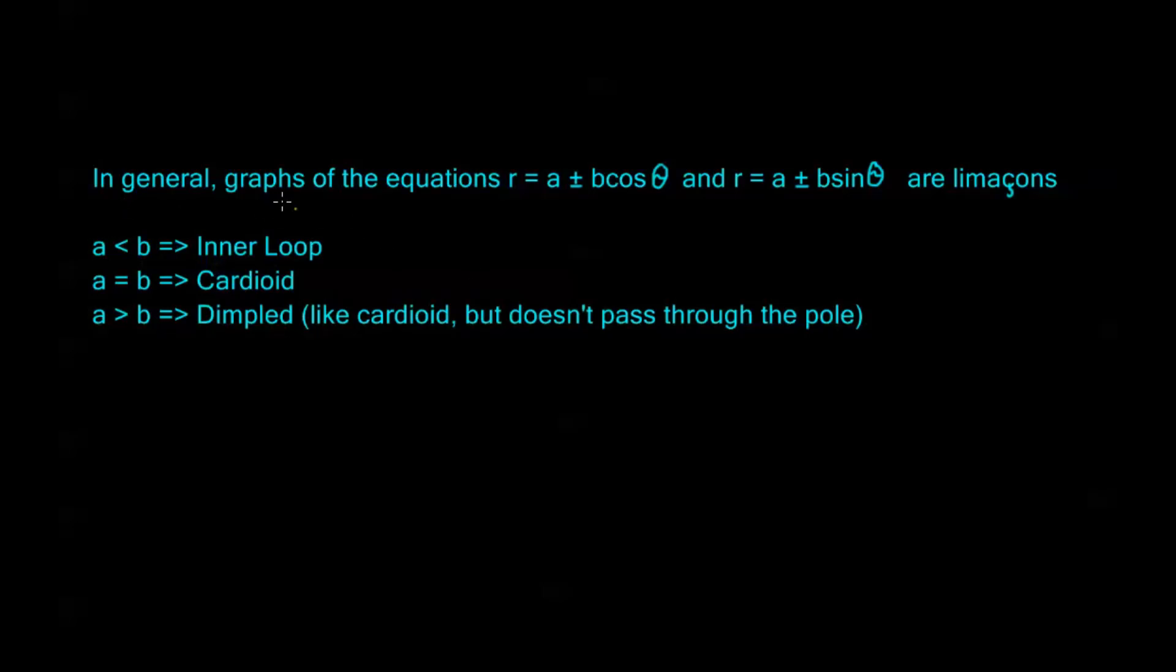Now the case we just did, we had an a that was less than b, right? We just looked at 1 + 2cos(θ) and 1 played the role of a, 2 played the role of b, so our a was less than b. This was our inner loop.